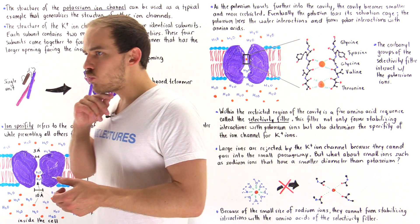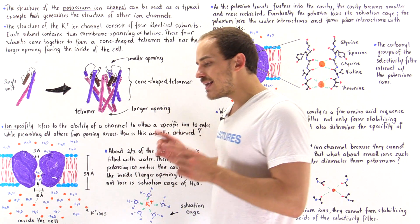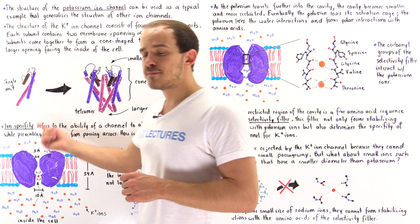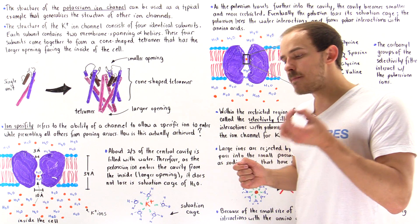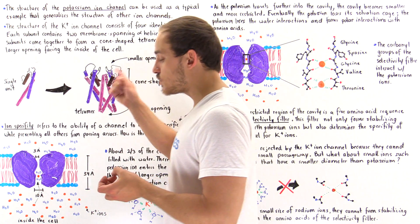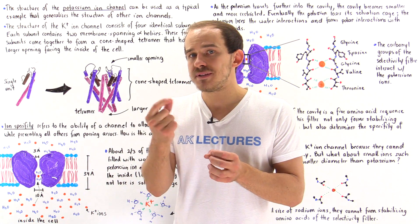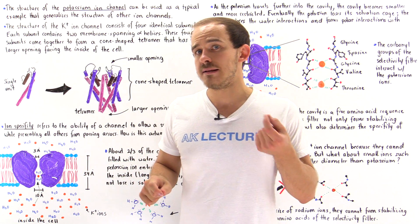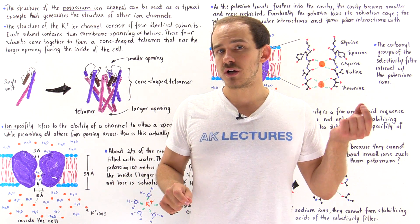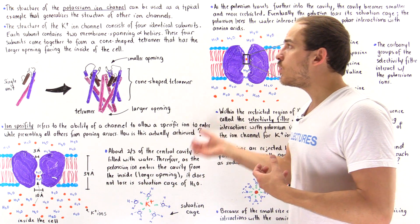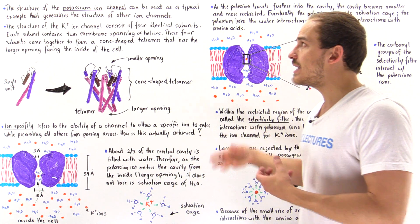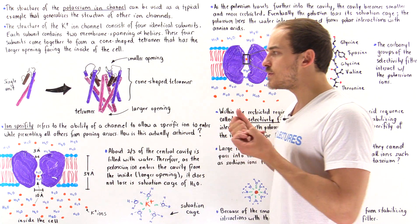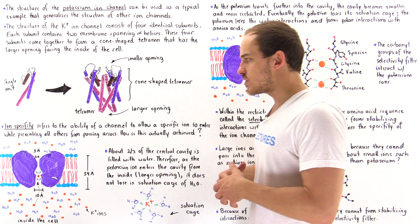The first question is: what exactly gives this ion channel the property we call ion specificity? Ion specificity is the ability of the potassium ion channel to move specific ions — in this case potassium ions — across the cell membrane, while at the same time preventing the movement of all other ions. How is this property achieved, and how are ion channels so specific to the types of ions they move across the cell membrane?